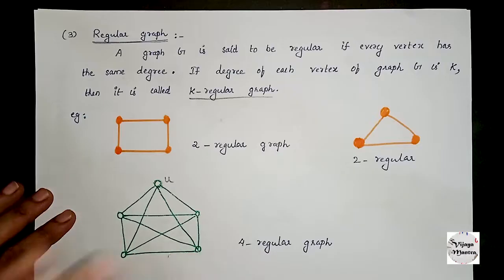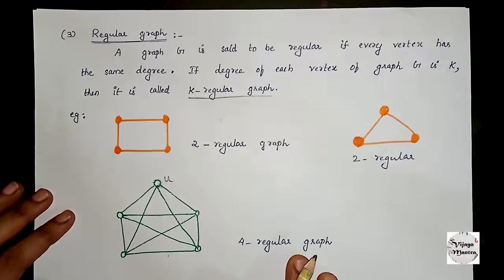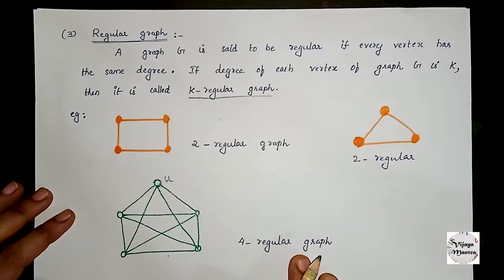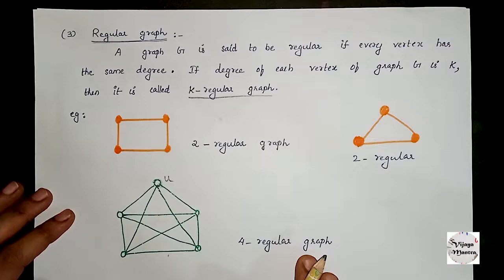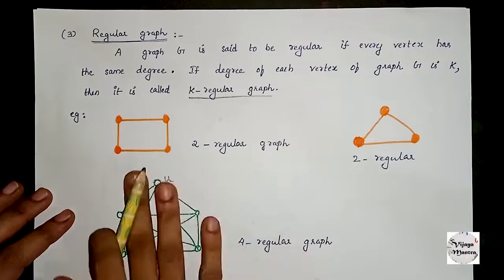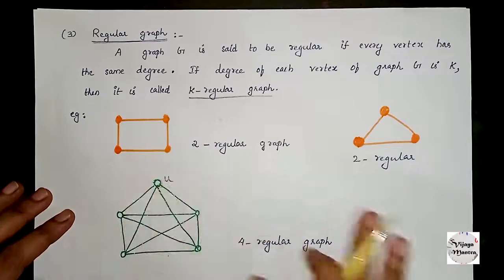This is a 4-regular graph. Let's now look at a detailed example of a regular graph and draw a 4-regular graph.